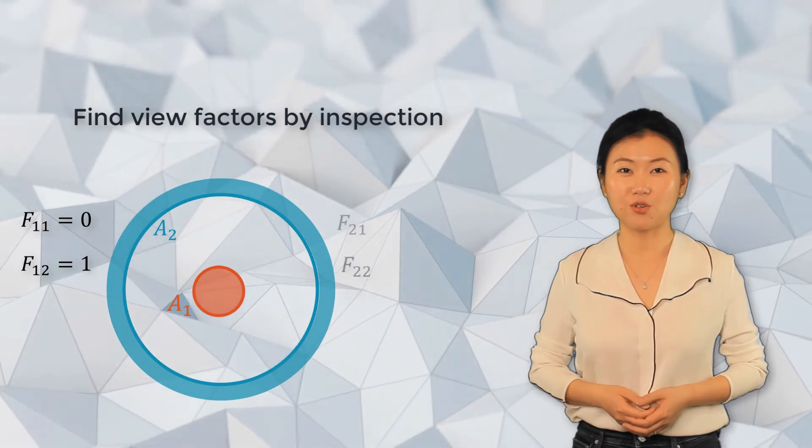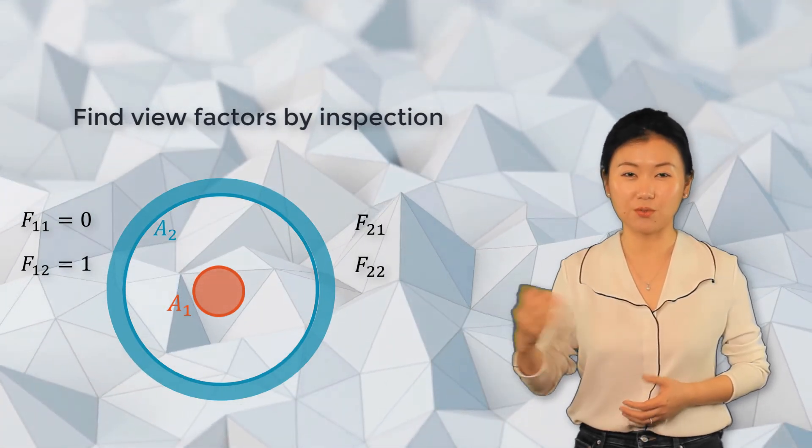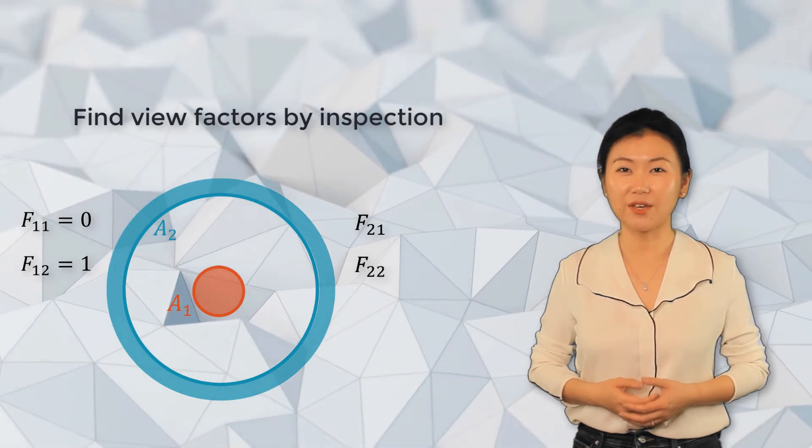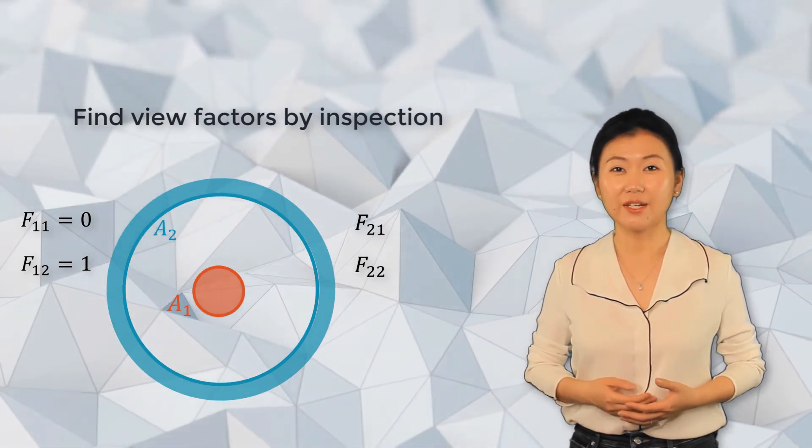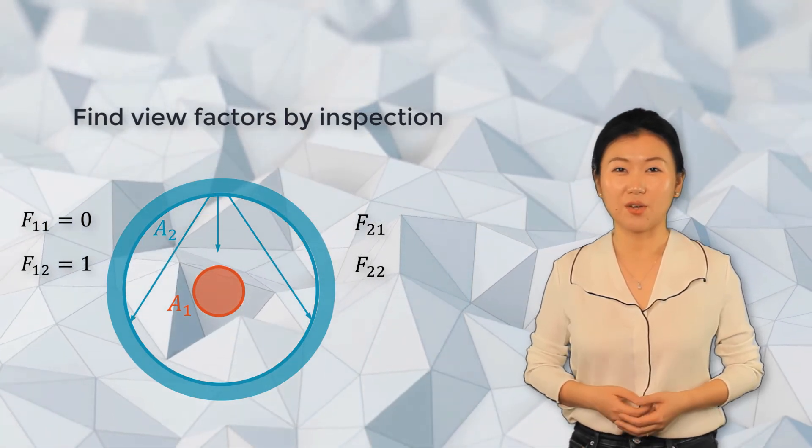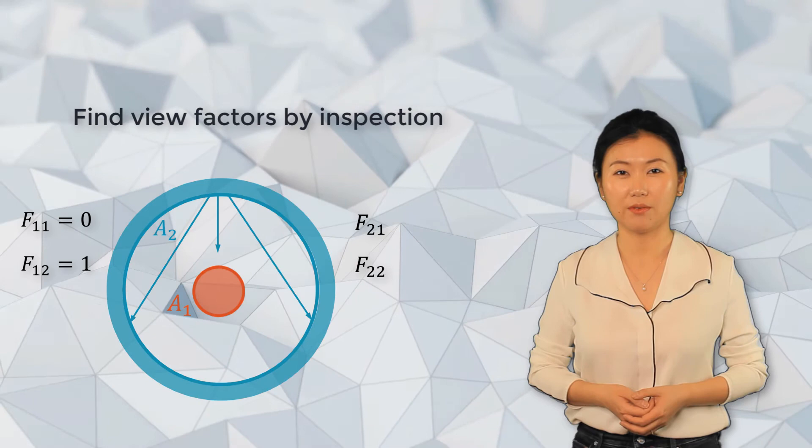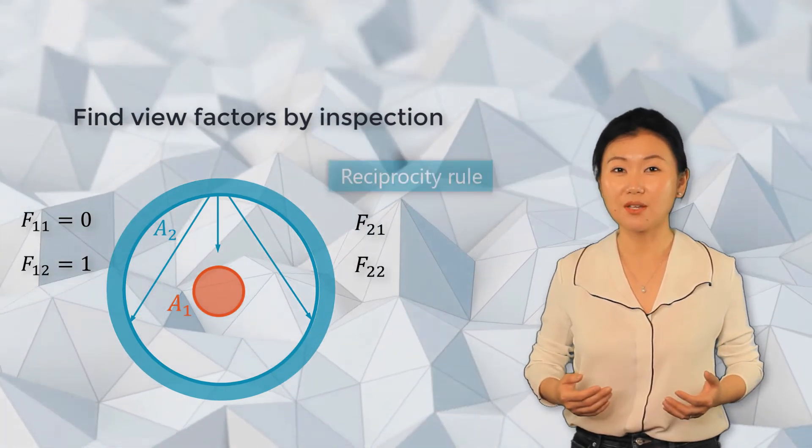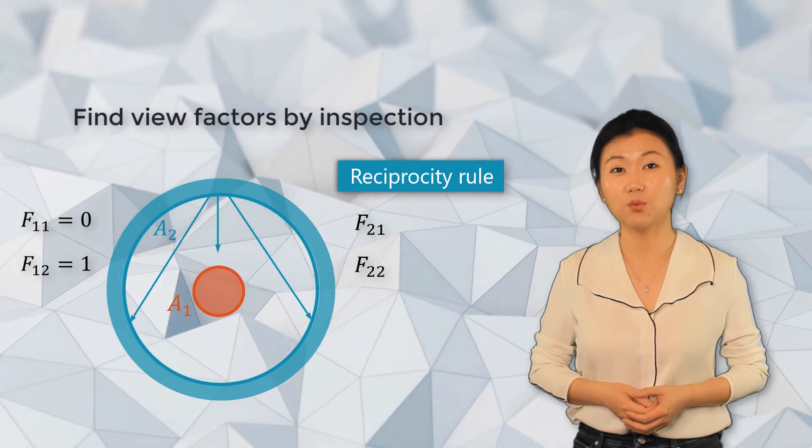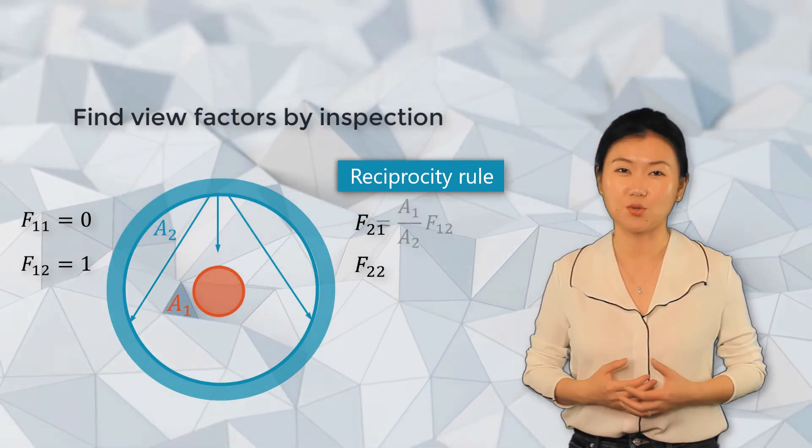We've found view factors from surface one, but how about view factors from surface two, which are F21 and F22? By inspection we know that surface two is a concave surface. Note that it not only can see itself but also can see surface one, so F21 will be a value between zero and one. This is where the reciprocity rule comes in handy. We can find F21 by the ratio between the areas of the two surfaces, and with F21 obtained, we can use summation rule to find F22.